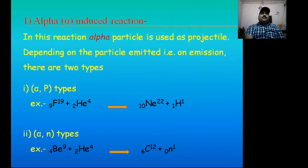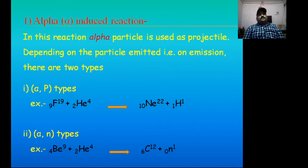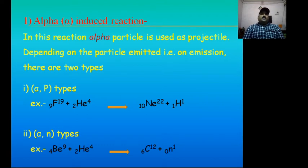The first type is alpha-induced reaction, where alpha particle is used as a projectile. Define alpha-induced artificial nuclear reaction: in this reaction, alpha particle is used as a projectile. Depending on the particle emitted, this type is subclassified into two types: alpha-proton type and alpha-neutron type.